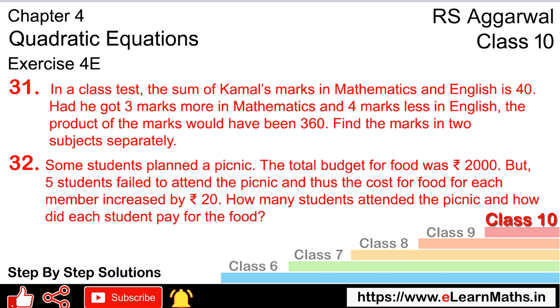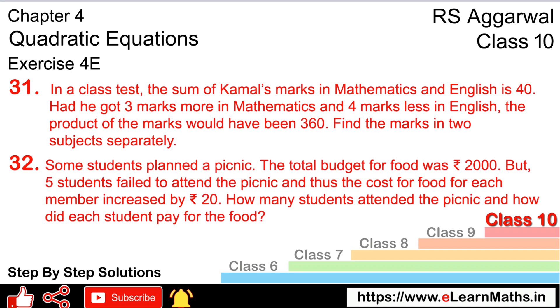We don't know mathematics and English marks. Let marks in mathematics be x and English be y. Now he says that the sum is 40, so x plus y equals 40.